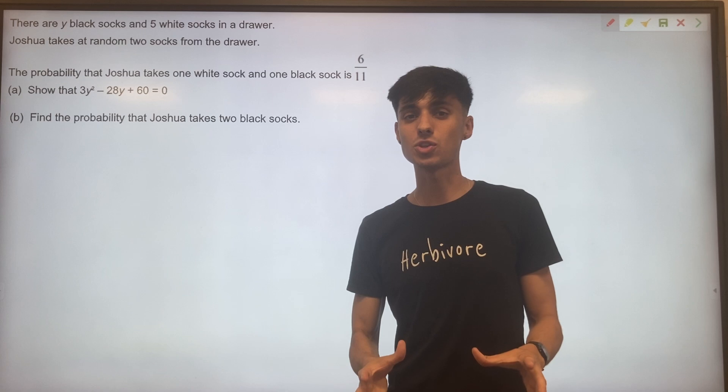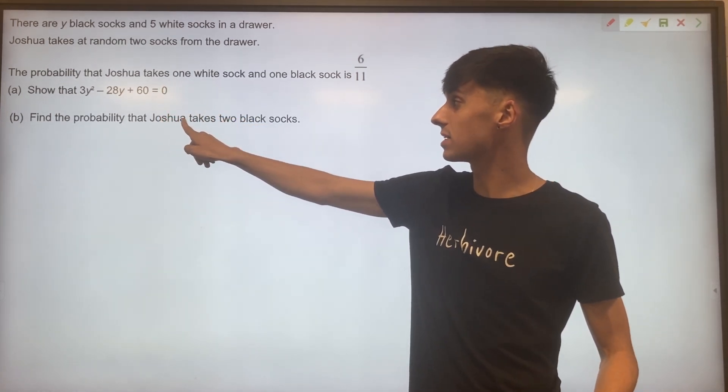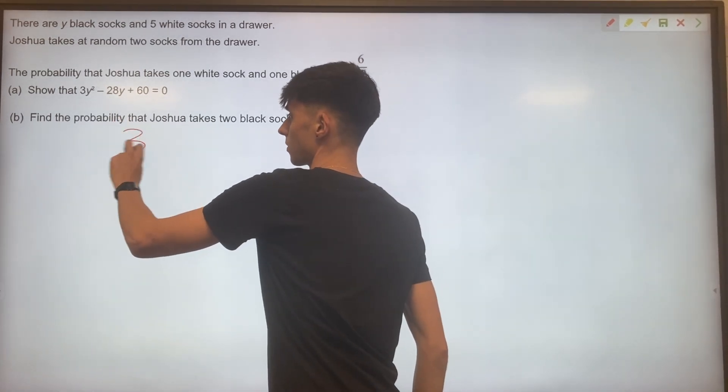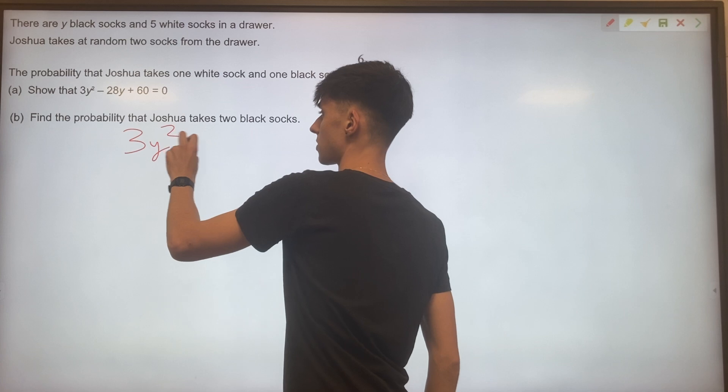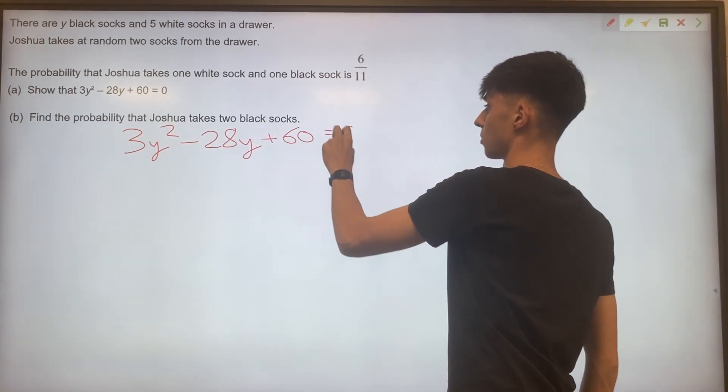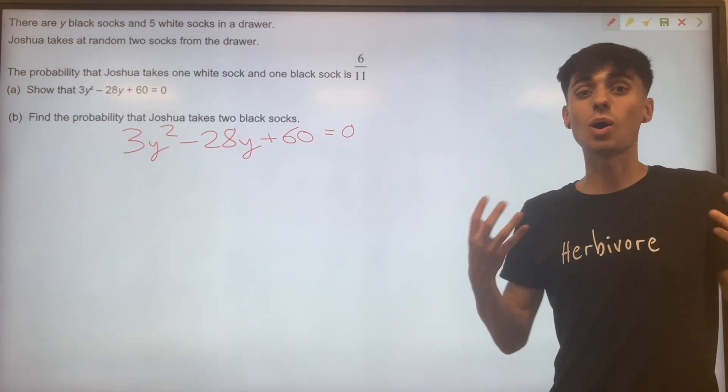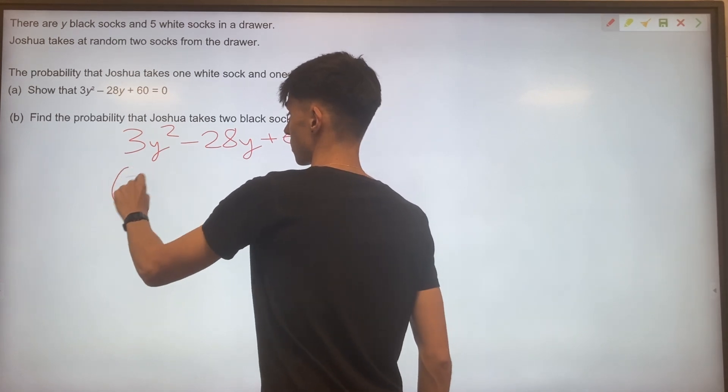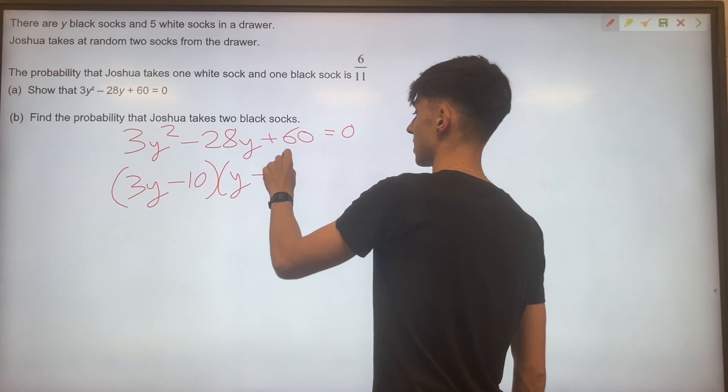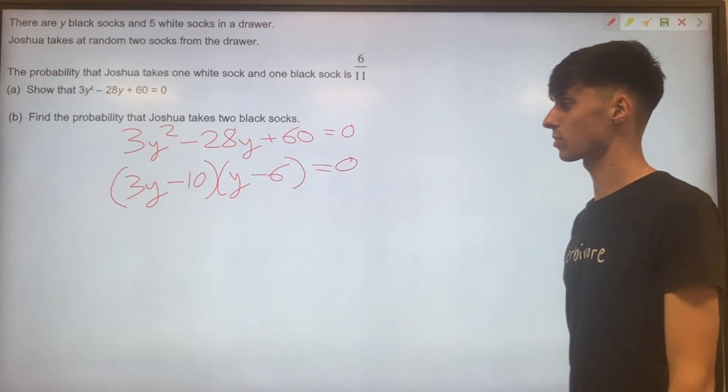In the second part of this question, we would like to use the quadratic that we've derived to find the probability that Joshua takes two black socks. So let's write down what we're starting with. We have 3y squared minus 28y plus 60 equals 0. And this is not a video about solving quadratics. So I'm just going to skip to the factorized state of this. We should have 3y take away 10 and y take away 6 equals 0. You can check that factorization for yourself.